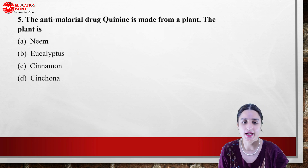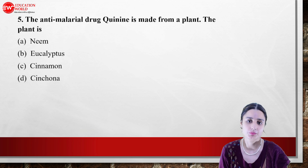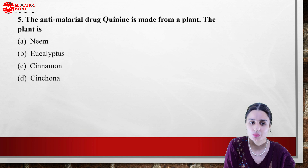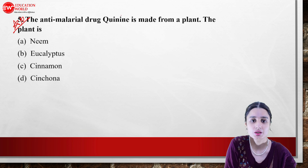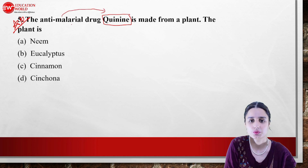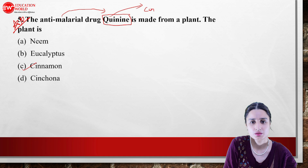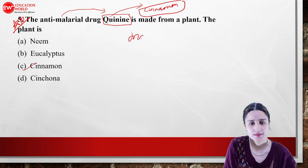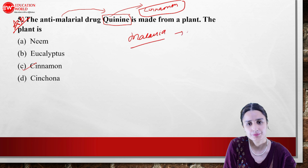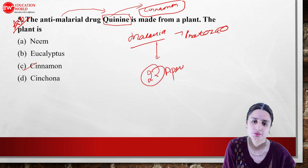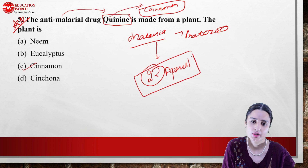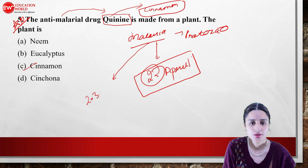The anti-malarial drug quinine is made from a plant. The most important question: what is the name of the anti-malarial drug? It is quinine, and it is made from the Cinchona plant. The causative agent of malaria is a protozoan. World Malaria Day is celebrated on 25th April, and the target to eliminate malaria is 2030.